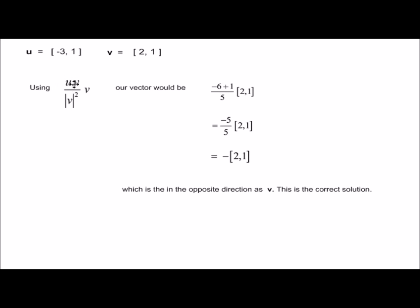So without the modulus sign around u dot v, negative 6 plus 1, negative 5 on 5, negative 1 times [2,1], which is now in the opposite direction to v, which is our correct solution.